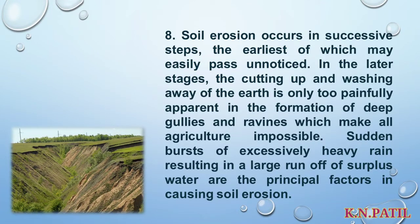Soil erosion occurs in successive steps, the earliest of which may easily pass unnoticed. In the later stages, the cutting up and washing away of the earth is only too painfully apparent in the formation of deep gullies and ravines, which make all agriculture impossible. Sudden bursts of excessively heavy rain, resulting in a large runoff of surplus water, are the principal factors in causing soil erosion.